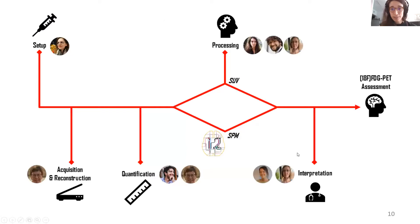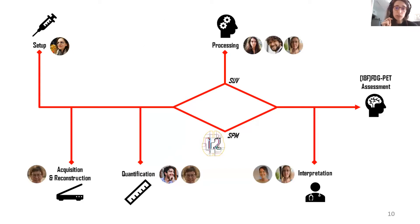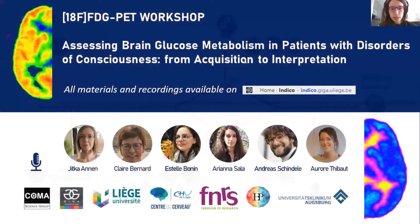Here is an overview of the workshop. We will start with Tommaso, who will give us information about the kinetics of the tracers — what happens after the tracer gets injected and how we can quantify it. This is important because it will help you understand why the patient setup is done the way it is, which is something Estelle will then talk about. Thank you very much for watching this video — I hope you will enjoy the workshop.